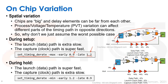For hold, we do the opposite: we want to make sure the launch path is faster than the capture path. So we multiply the launch path by 0.9 and the capture path by 1.2 in the set_timing_derate command. Note that Cadence has some different approaches here than Synopsys, so you need to read the manual carefully for the tool you're using.